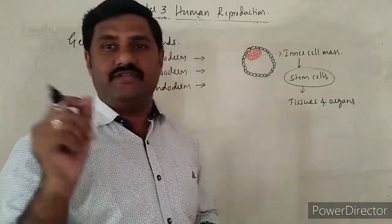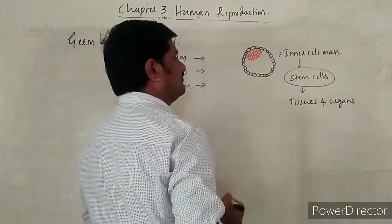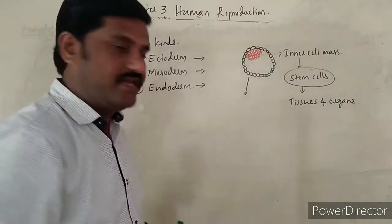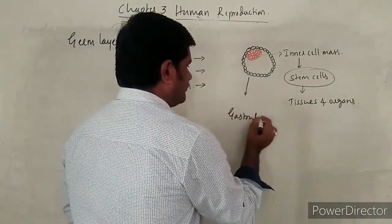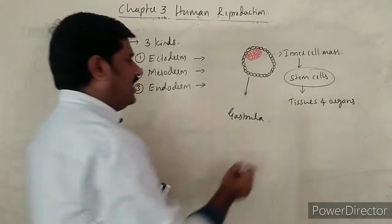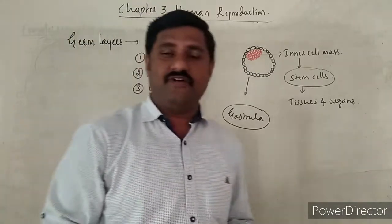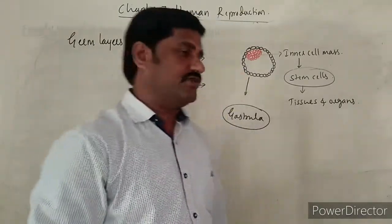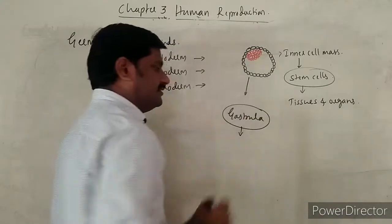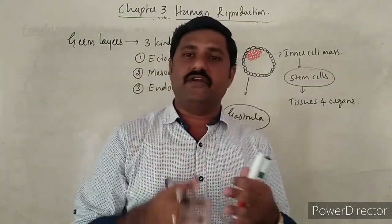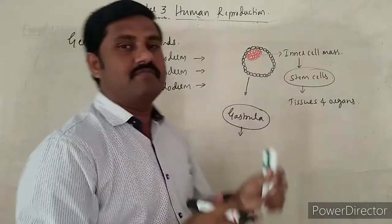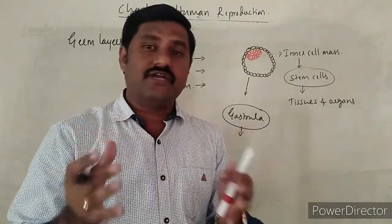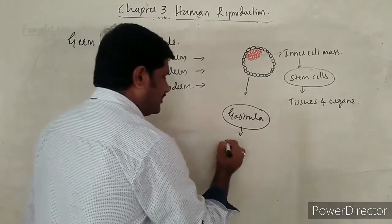One more thing which is not there in the NCERT we must understand. Whenever the implantation of the blastocyst takes place, this blastocyst develops into the next developmental stage of the embryo which is called gastrula. This gastrula is formed from a process called gastrulation. In the gastrula, movement of different types of cells — that is, the inner cell mass — takes place. The inner cell mass moves, and such kind of movement of cells is called morphogenetic movement.